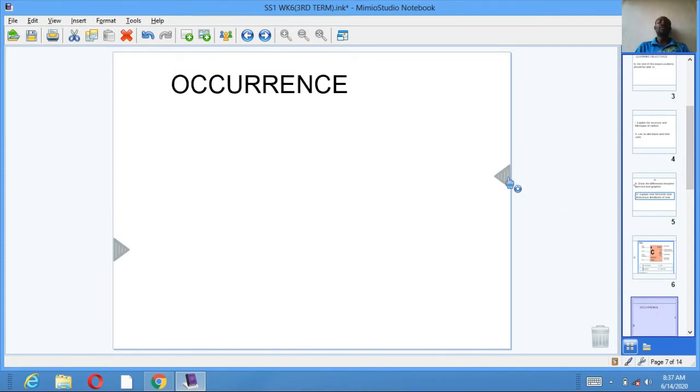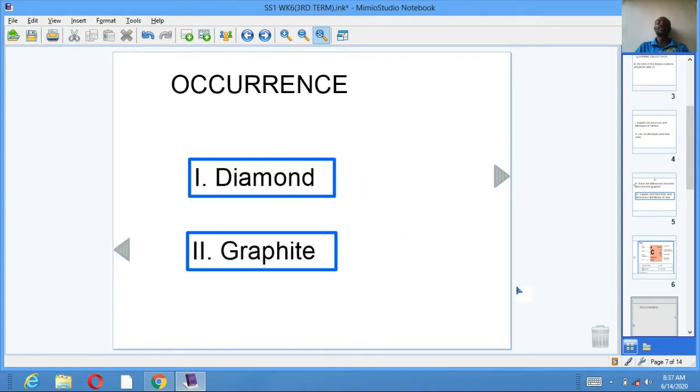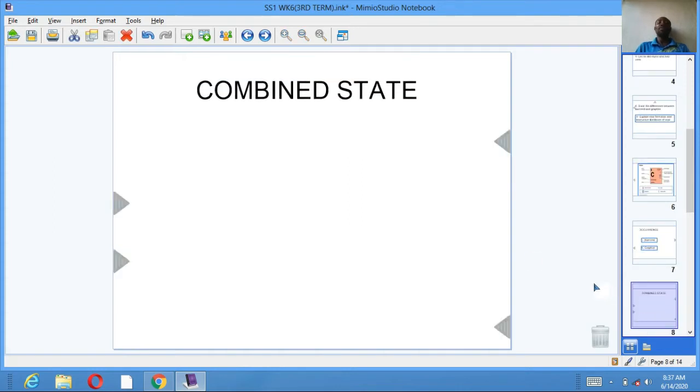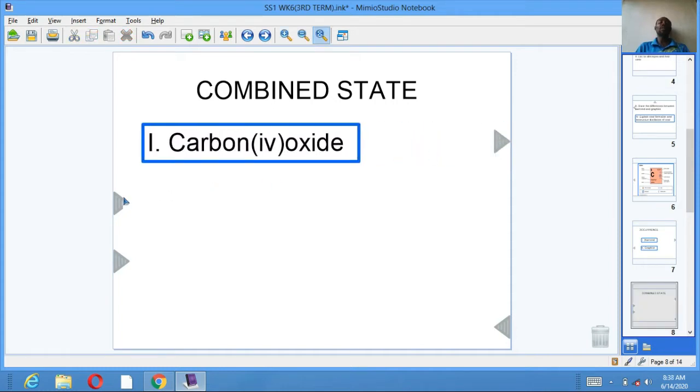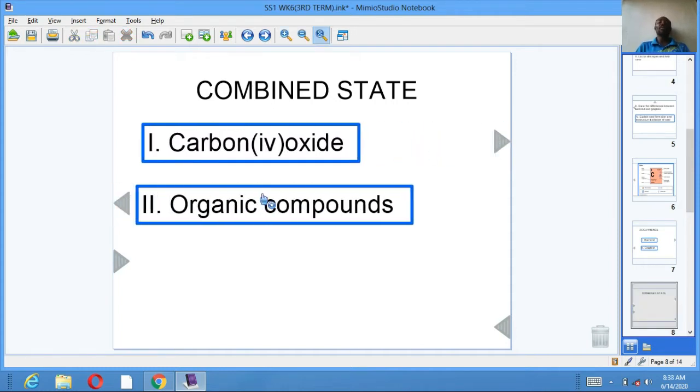Occurrence. Carbon can exist in pure form and in combined form. It exists in pure form as diamond and graphite. In the pure form or combined states, it occurs as carbon dioxide and organic compounds.